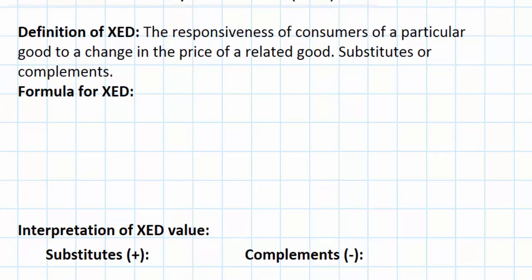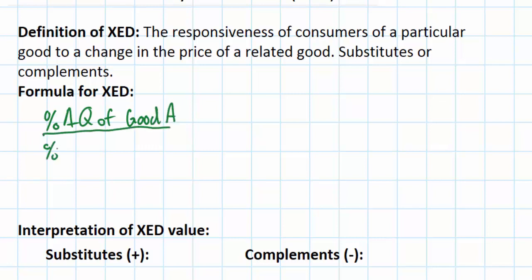The formula for XED — cross elasticity of demand — is going to look very familiar to those who have already studied the other types of elasticity. It's simply the percentage change in the quantity of one good — in this case I'll call it good A — divided by the percentage change in the price of good B. The assumption here is that goods A and B are either substitutes for each other or complementary goods.